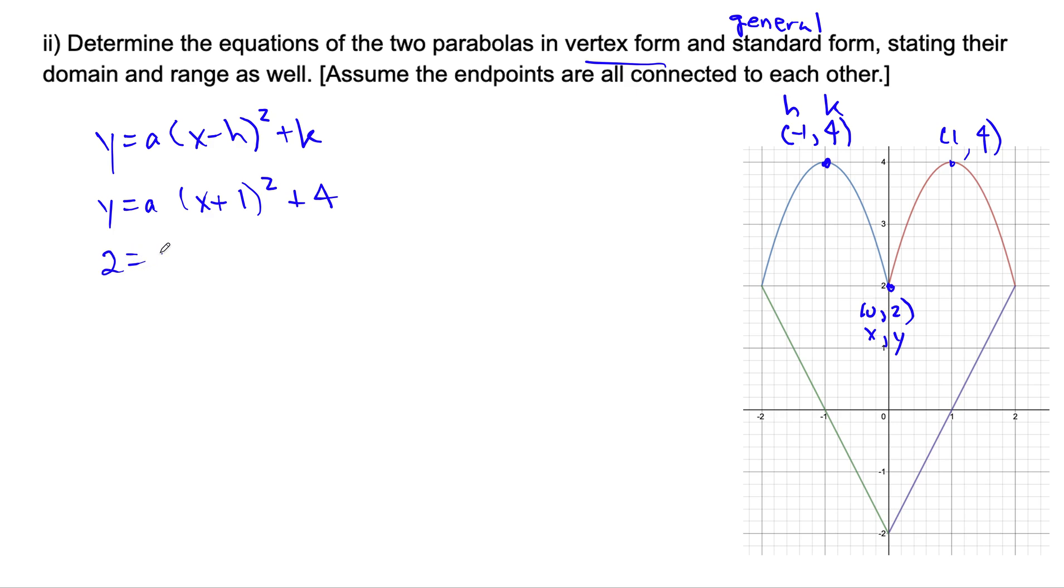We would have 2 = a(0 + 1)² + 4. This will simplify to 1², which is 1. Subtract 4 from both sides as well. So -2 = a(1)². Divide by 1², which you don't need to do. So -2 = a.